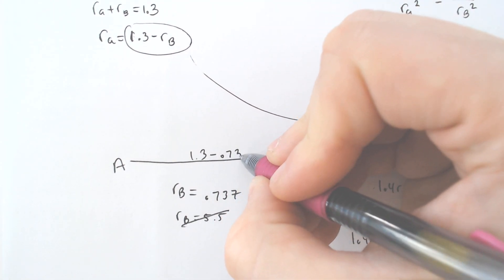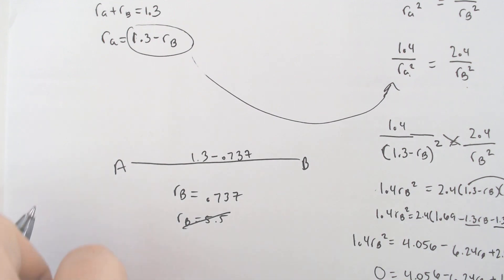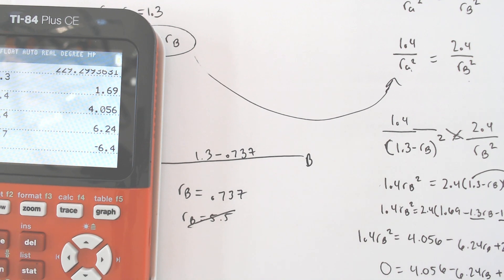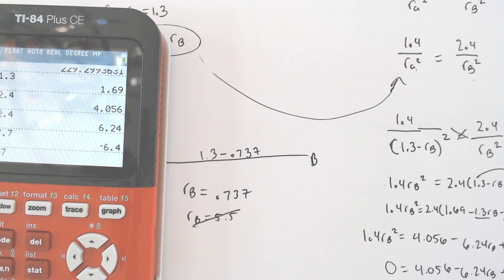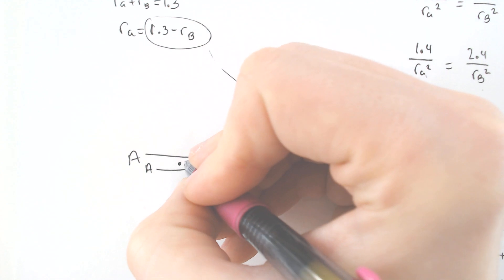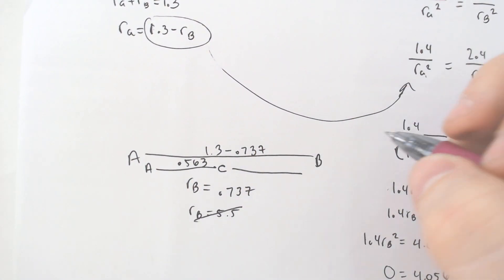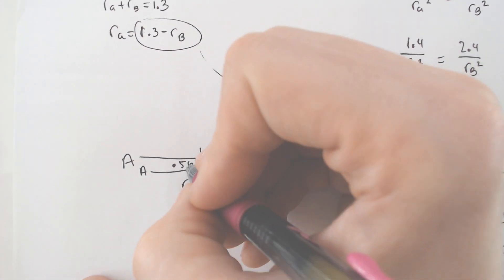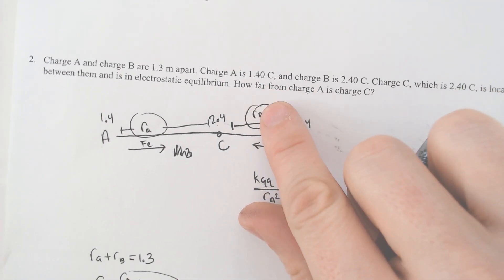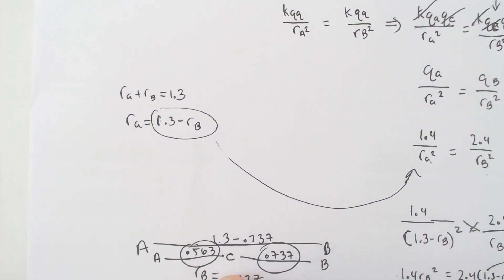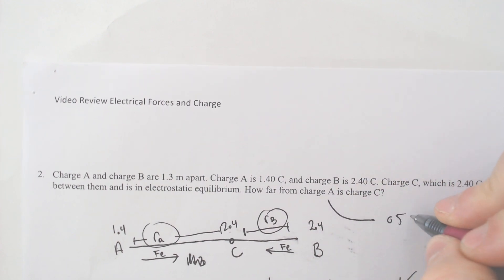So if I subtract the 0.737, then I would have the leftover part. 1.3 minus 0.737 is 0.563. So that would mean from A to C is 0.563 and from C to B would be the 0.737. Make sure that you actually answer the question correctly. I got both of the radiuses now. And it says how far from charge A is charge C? Well, how far from charge A is it? The 0.563. So we have our answer as 0.563 meters.